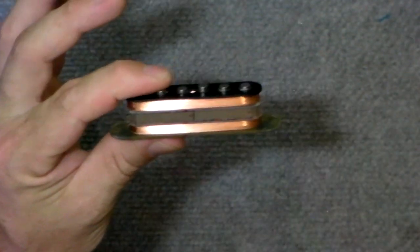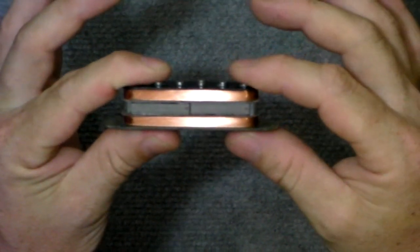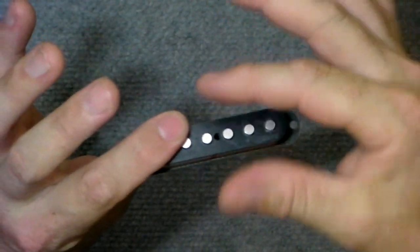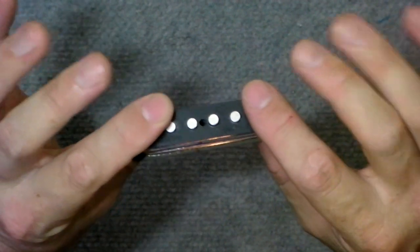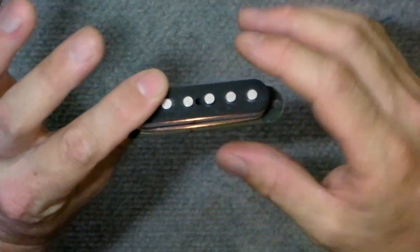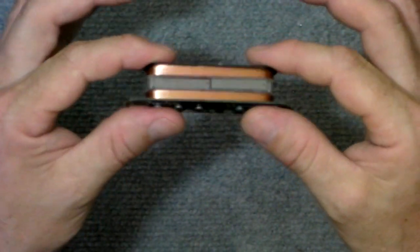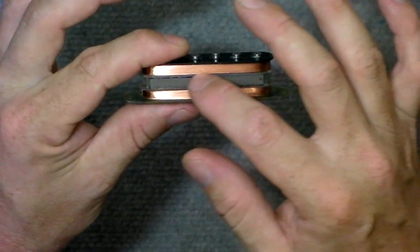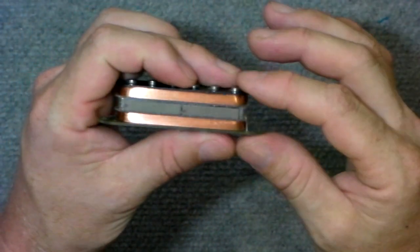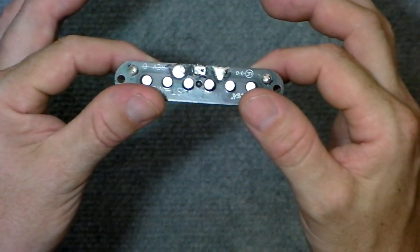So we've got what is essentially an inline humbucker. So it bucks the hum, but it has the aperture or the pickup area of a single coil, whereas a humbucker has quite a larger pickup area, and that's why it retains that single coil-y kind of sound. I'd imagine that these are the samarium cobalt magnets running around the middle there. And yeah, that's pretty much it.